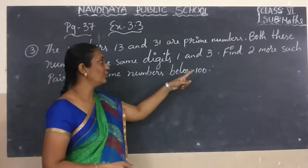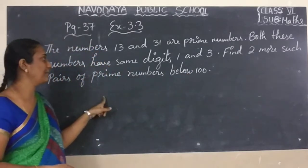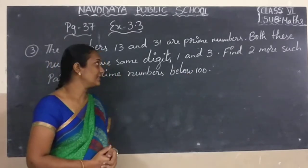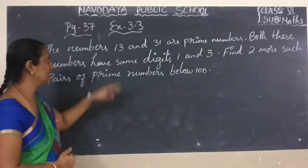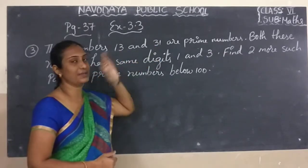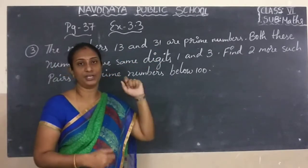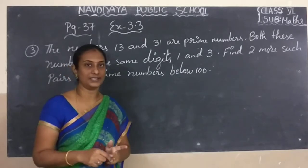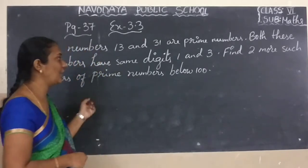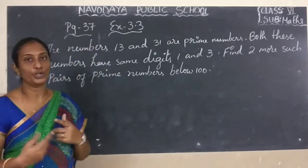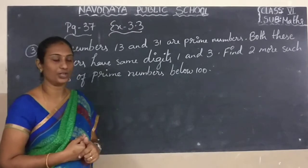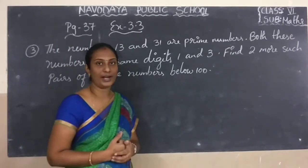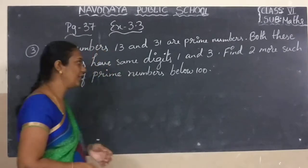Now find two more such pairs of prime numbers below 100. Same process — 13 is a prime number, 31 is a prime number. In 13 and 31, we are having the same digits. Like that only, we have to take two more examples, that also from below 100.